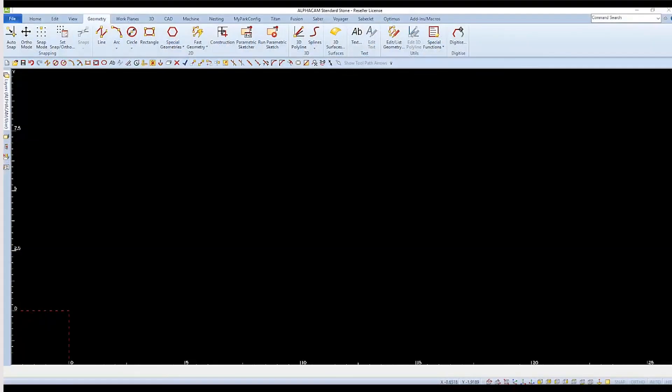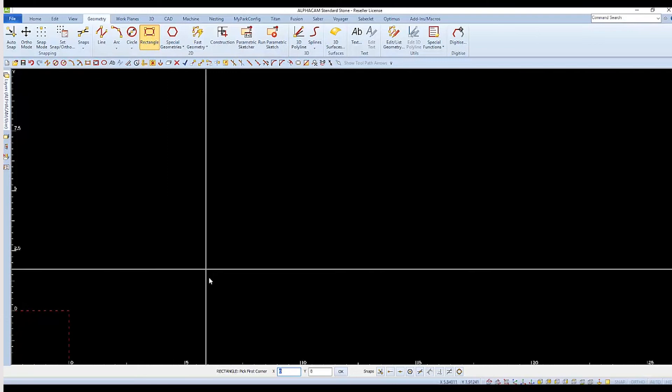In AlphaCam, we also have an x0 and y0 location, which all of our coordinates will refer to. We'll instruct AlphaCam to draw a rectangle by clicking on the rectangle icon. Then we'll follow the prompts on the command line at the bottom of the screen to complete the process.